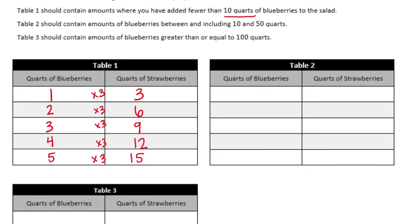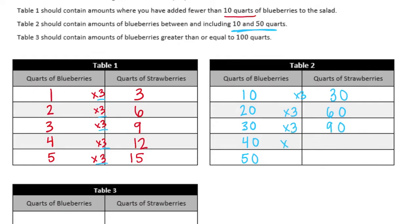Table 2 should contain amounts of blueberries between and including 10 and 50. So we'll use 10, 20, 30, 40, and 50. The relationship does not change — we still multiply by 3. So 10 times 3 is 30 strawberries, 20 times 3 is 60 strawberries, 30 times 3 is 90 strawberries, 40 times 3 is 120 strawberries, and 50 times 3 is 150 strawberries.